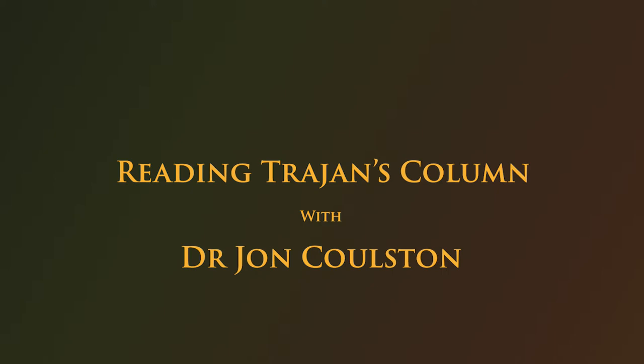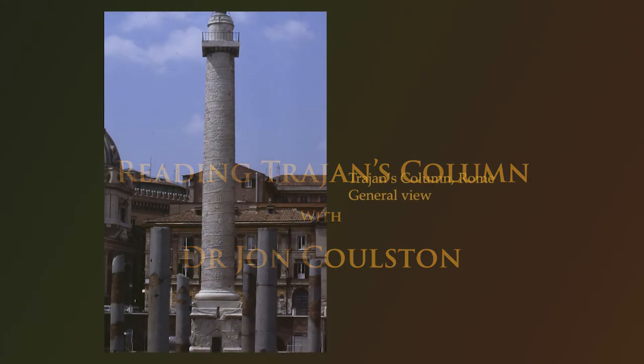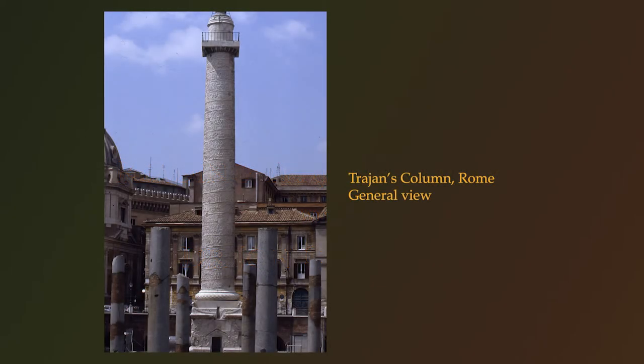The emperor Trajan reigned from 98 to 117 AD. While many previous Roman emperors had based themselves in Rome and left military campaigning to their generals, Trajan was very much a soldier emperor, and under his leadership the Roman Empire grew to its largest extent. In the latter half of his reign he came into increasing conflict with the Parthian Empire as he expanded the borders of Rome eastwards into Armenia, Babylon, and other parts of ancient Mesopotamia.